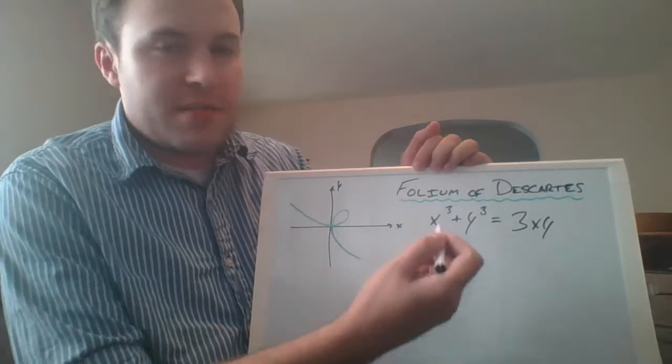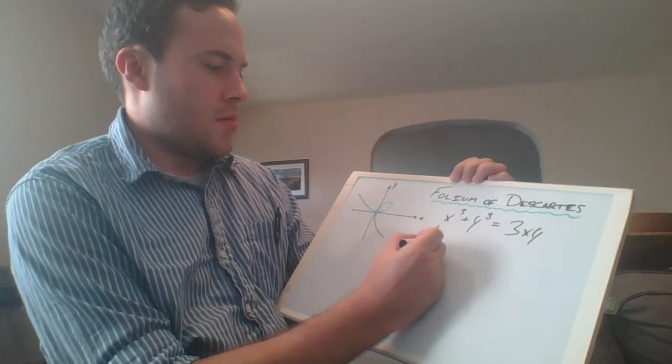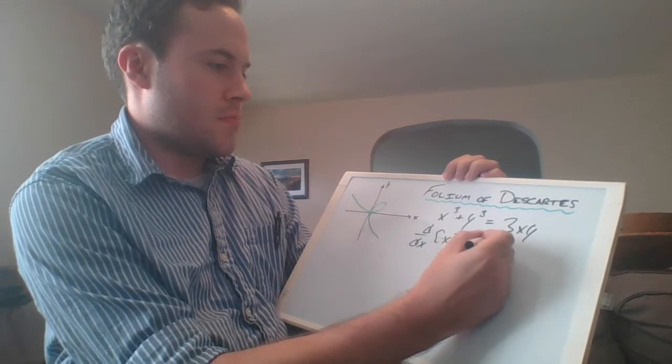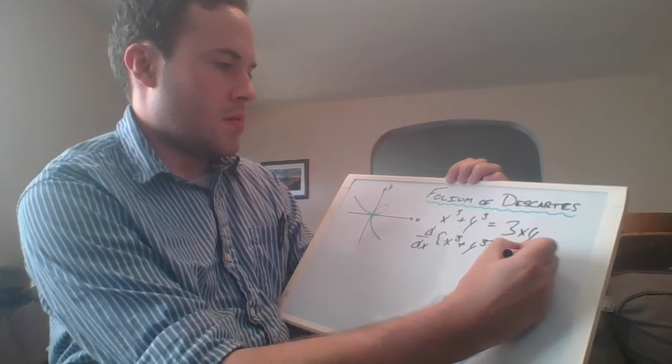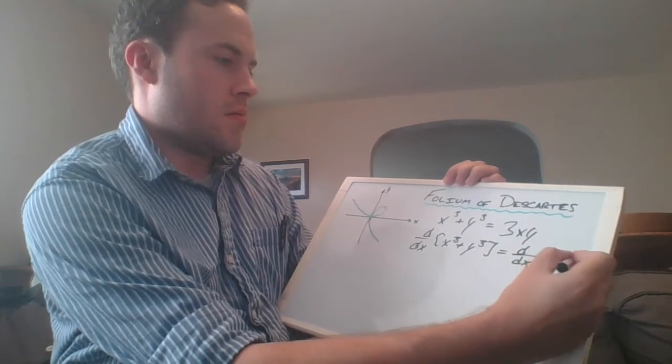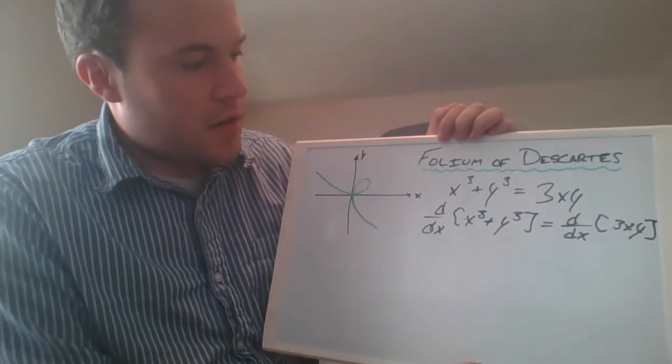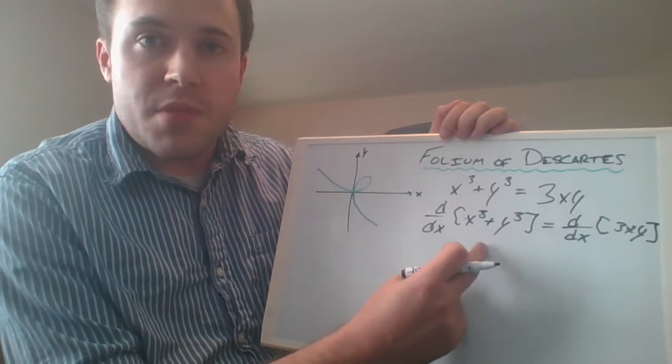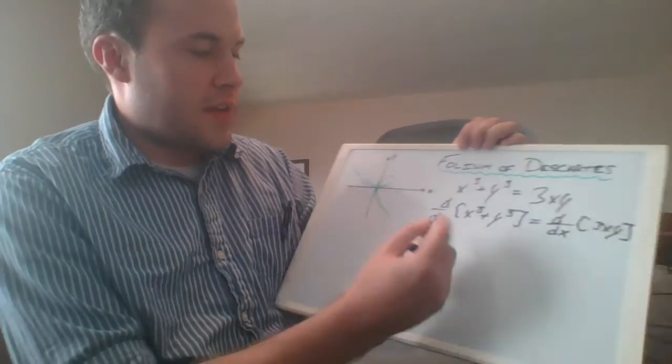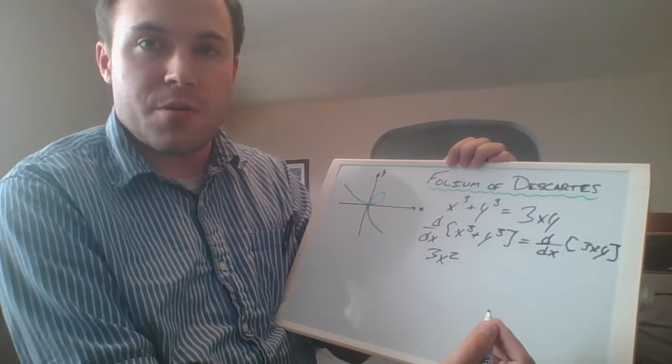So let's take the derivative of both sides of this with respect to x. On the left hand side we can just go ahead and do this one straight away. The derivative of x cubed with respect to x is going to become 3x squared.